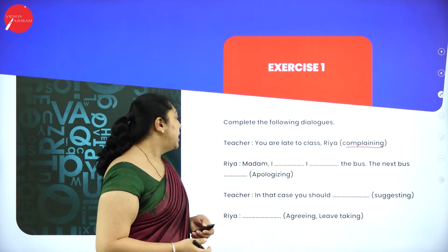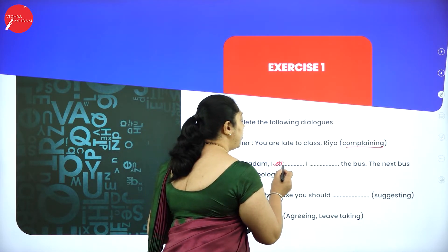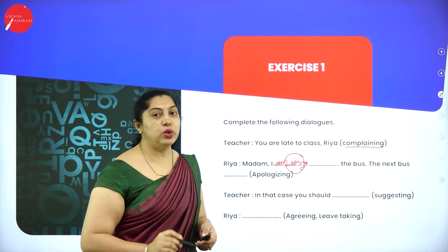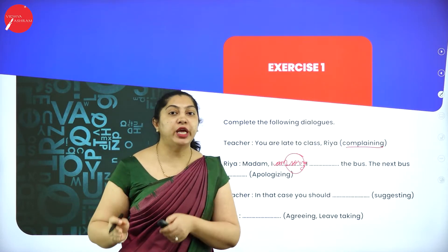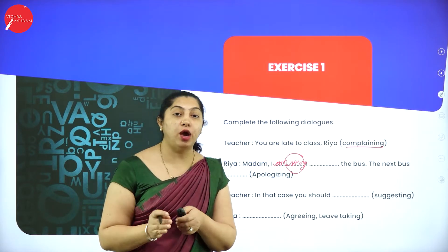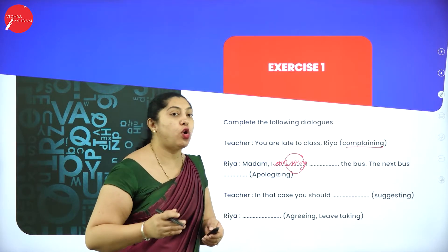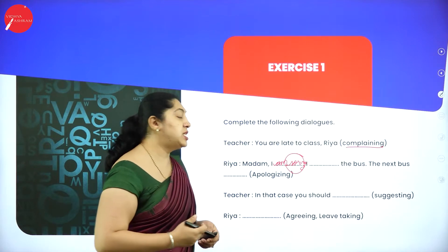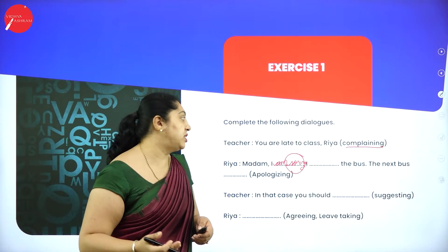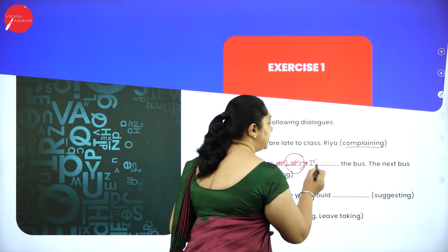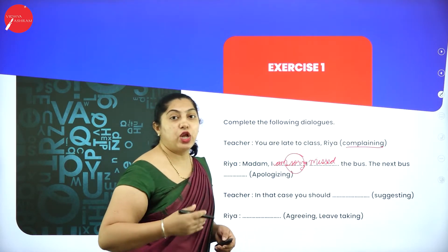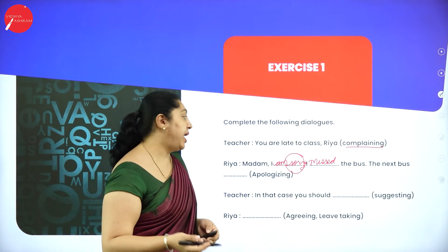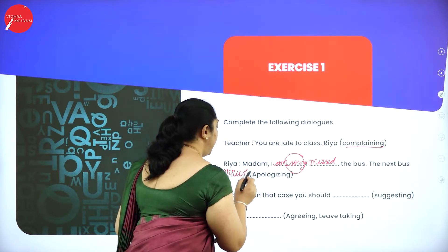Rhea says: 'Madam, I am sorry. I missed my bus. The next bus arrived late.' She is apologizing. By saying sorry, she's not going to lose anything. Whatever attitude or ego you have, keep it aside. Don't show your attitude anywhere. It is your mistake — you have to acknowledge it and move on. She gives the reason why she is late.